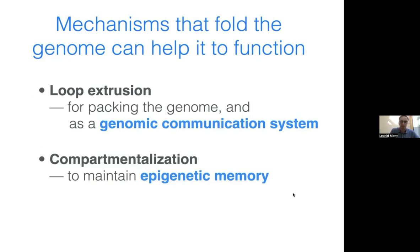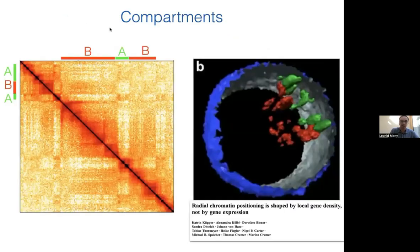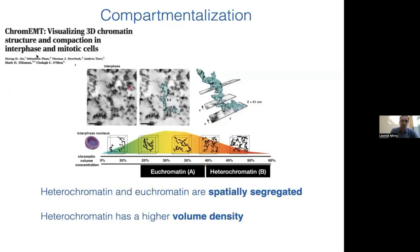Let me switch gears and talk about compartmentalization. At the Hi-C level it manifests as the checkerboard pattern; in microscopy it's known for decades as active chromatin in the center of the nucleus and inactive chromatin at the periphery. Heterochromatin is also highly dense—about 20 to 30% volume fraction for euchromatin versus roughly two-fold higher for heterochromatin. Both spatial segregation and higher volume density of heterochromatin will turn out to be important.